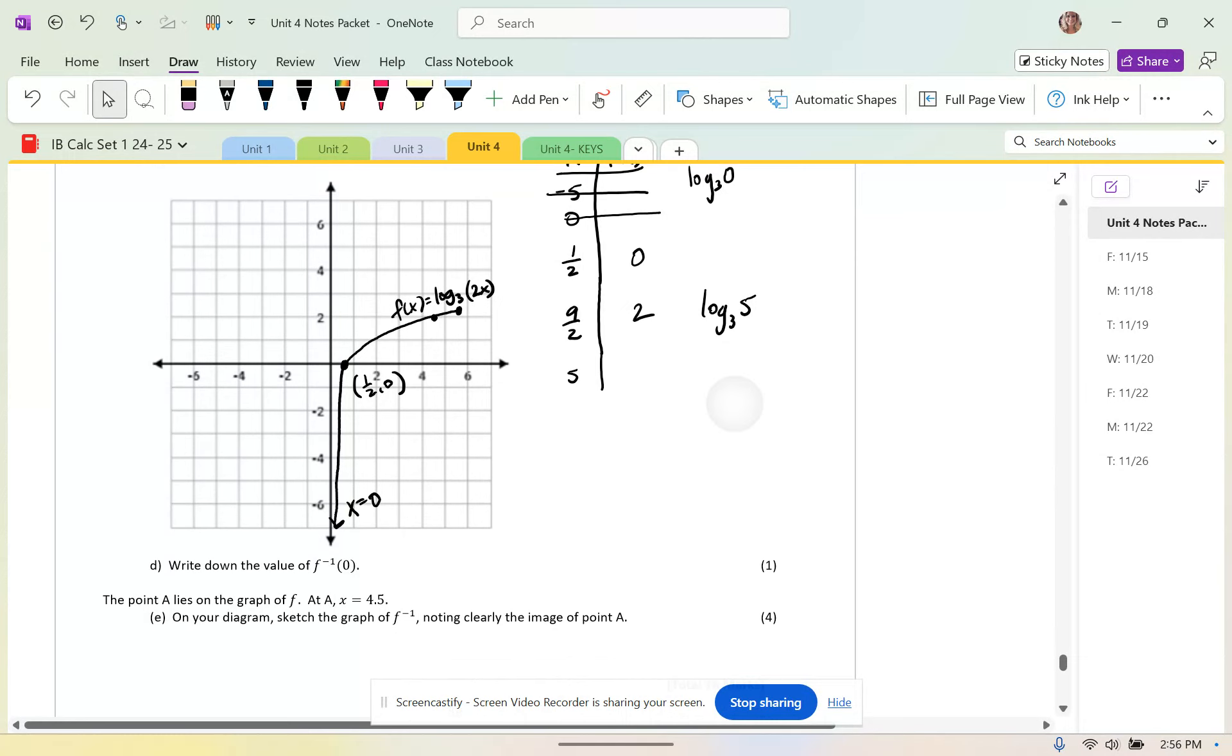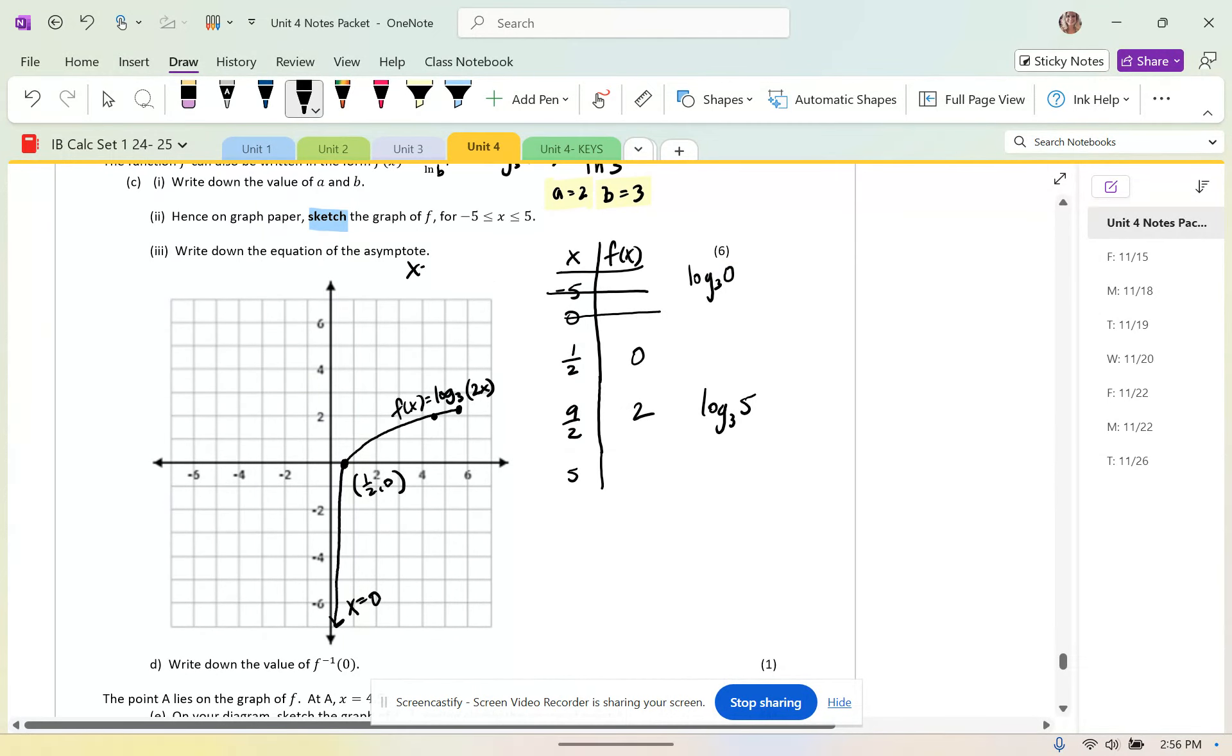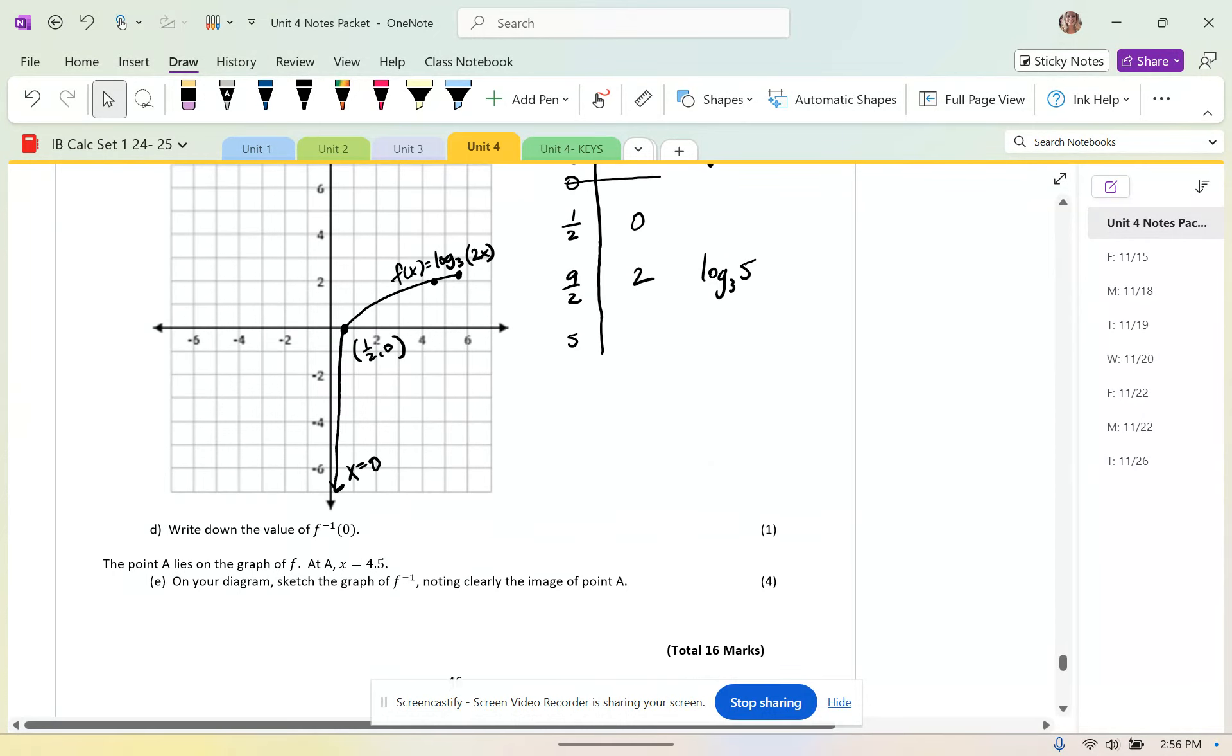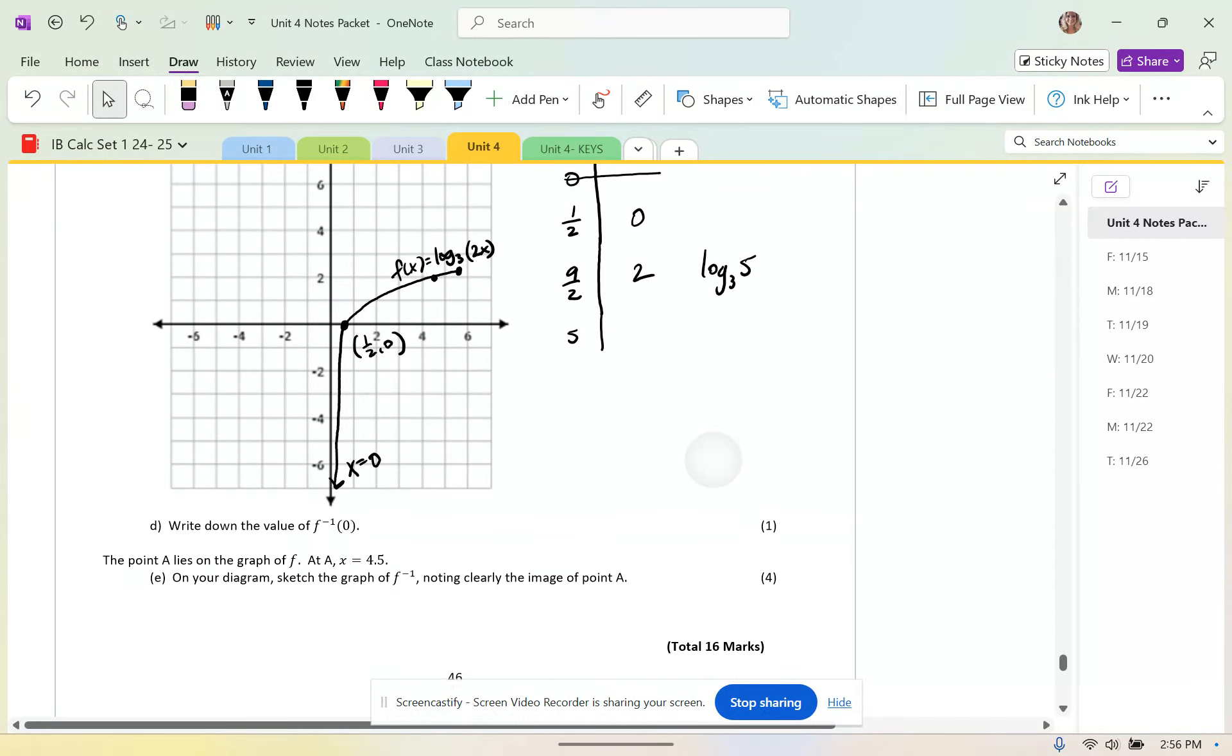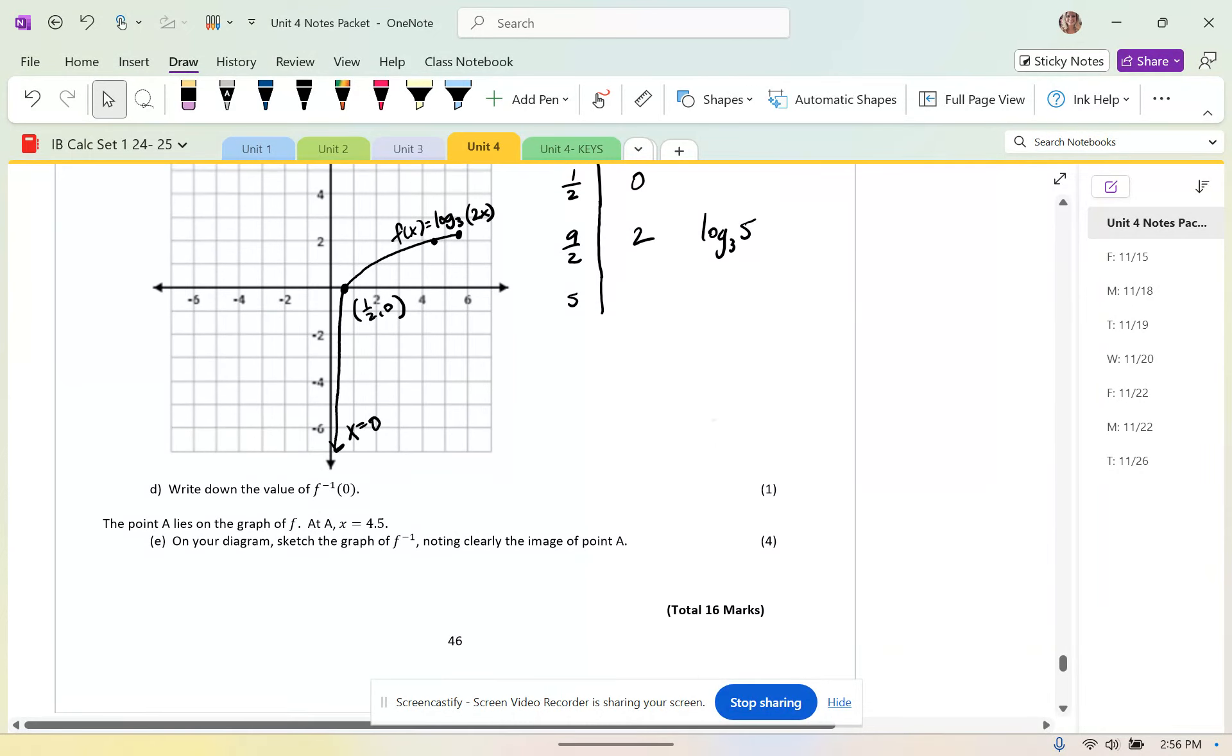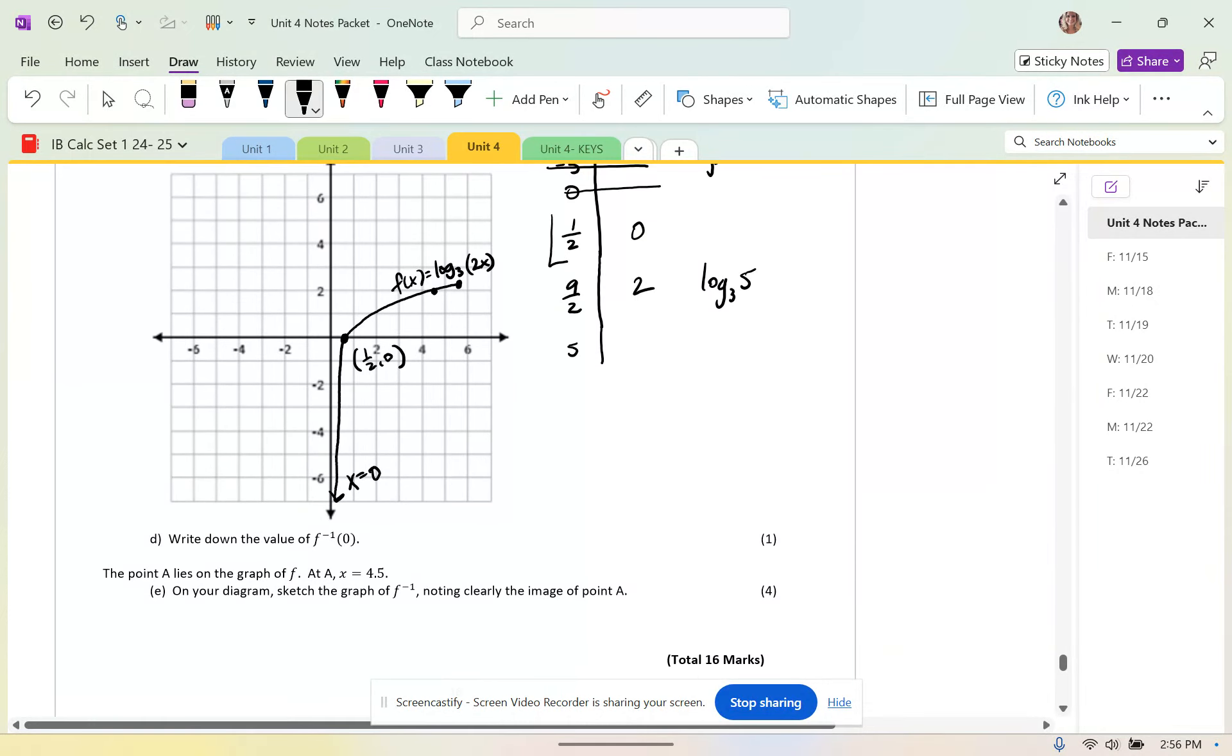And then now, I should probably write down the equation up here too. x equals 0. And then, write down the value of F, the inverse of F of 0. So I do know that 1 half has an output of 0. Therefore, if I switched those on the inverse, the inverse of 0 would be 1 half.